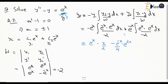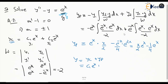This simplifies to x over 2 times e to the power of x, minus 1 over 4. The two e to the power of x terms are added together, giving e to the power of x. So this is yp, and our complementary solution yc gives y equals yc plus yp, which is c1 e to the power of x plus c2 e to the power of minus x, plus x over 2 e to the power of x minus 1 over 4 e to the power of x.